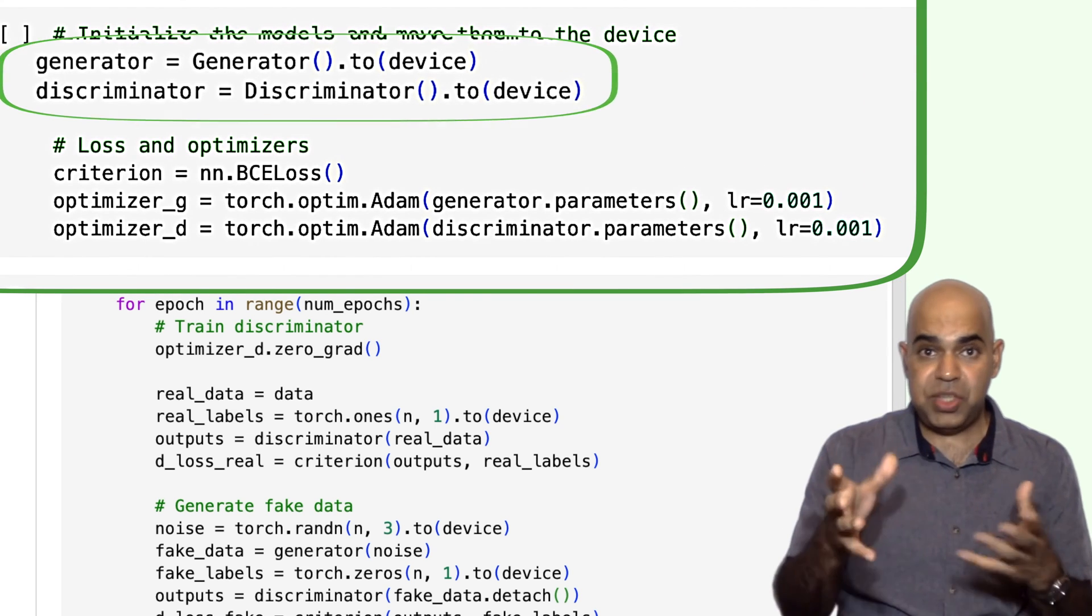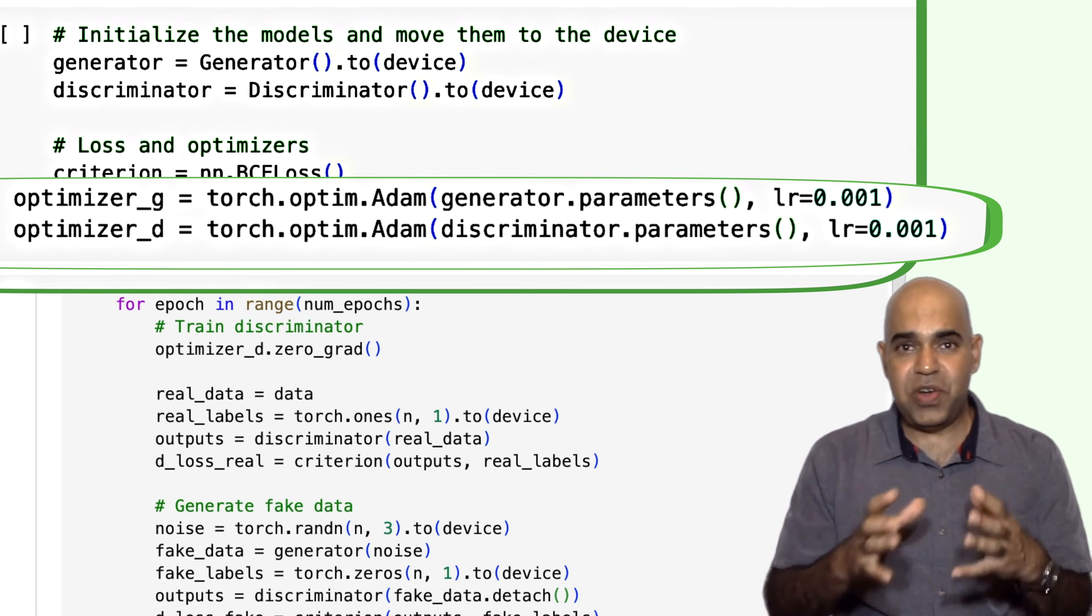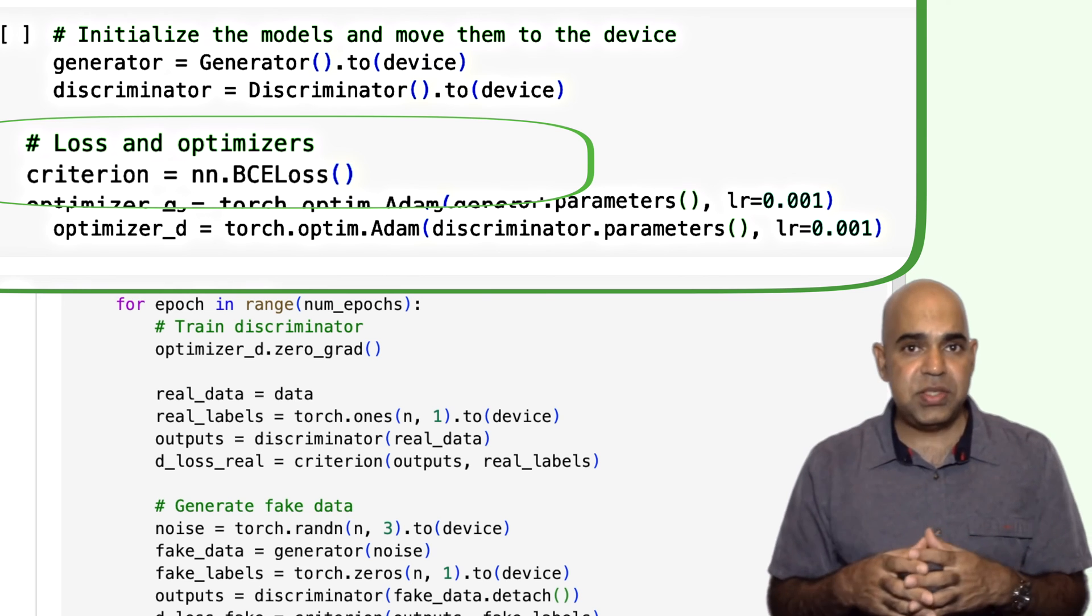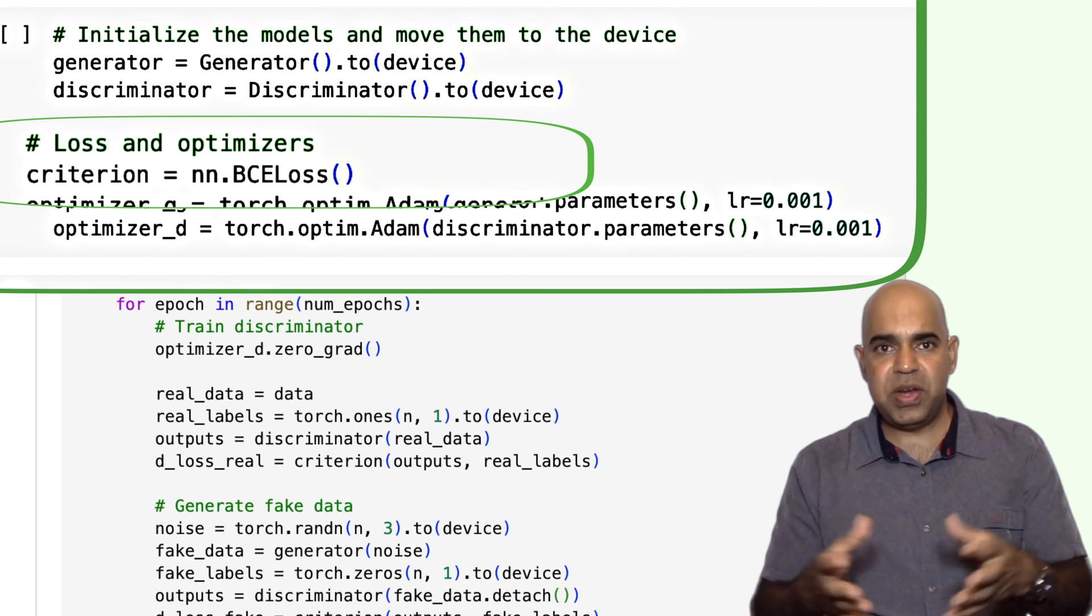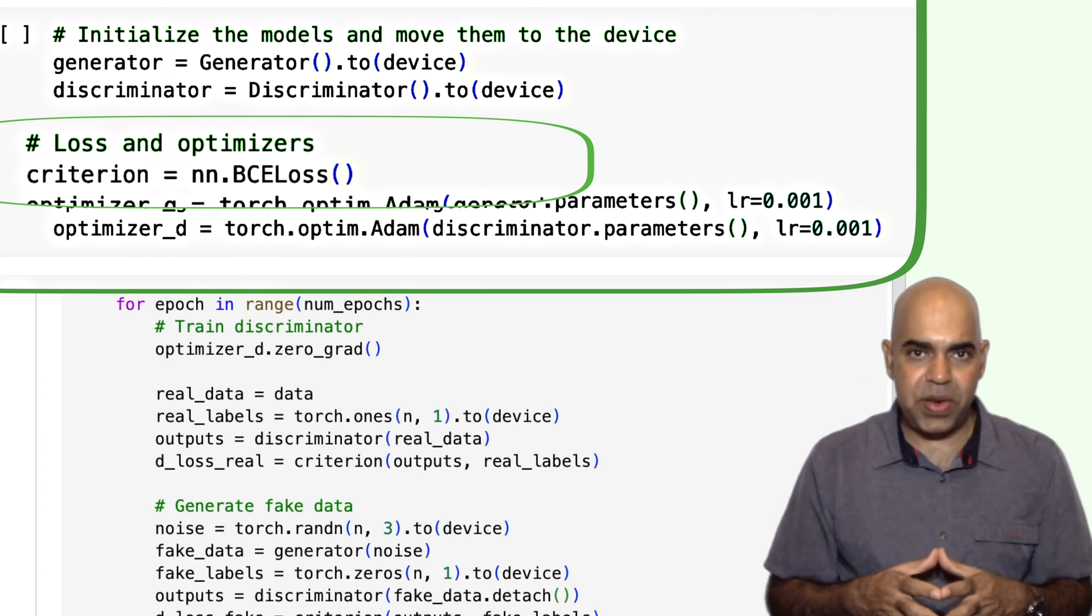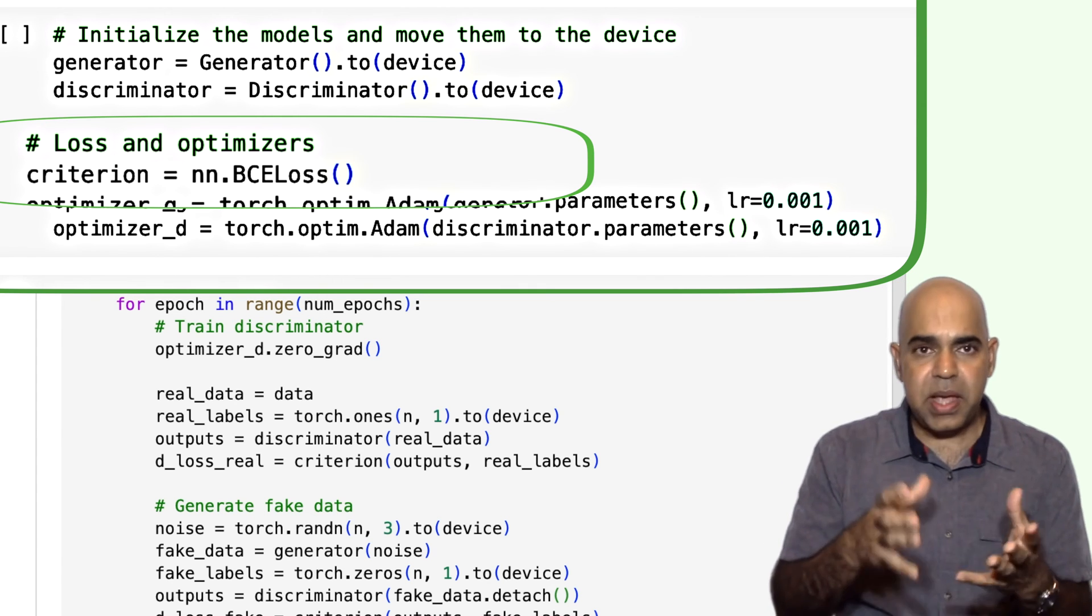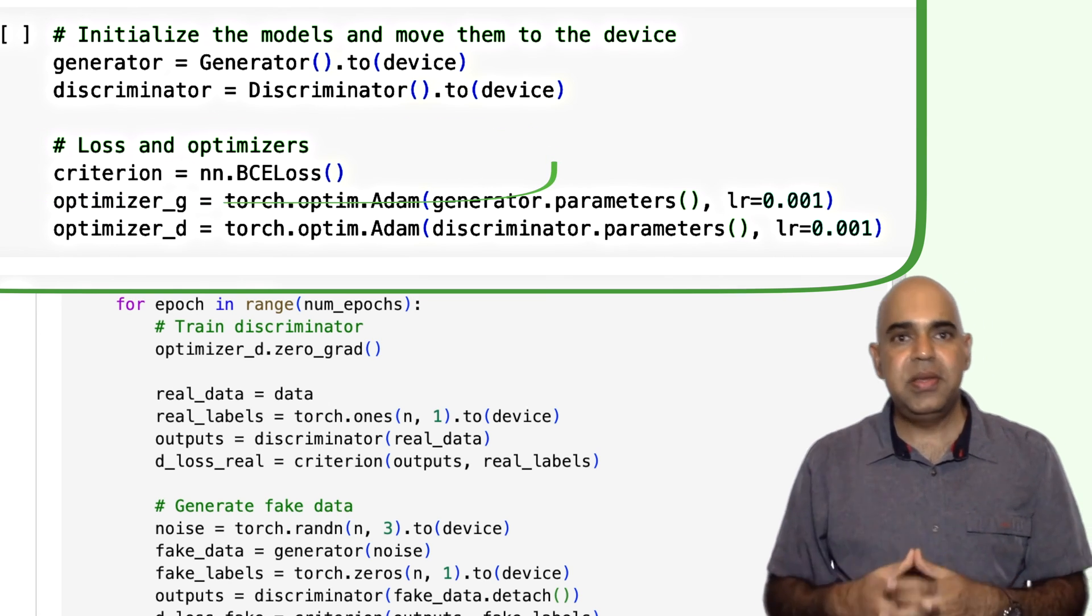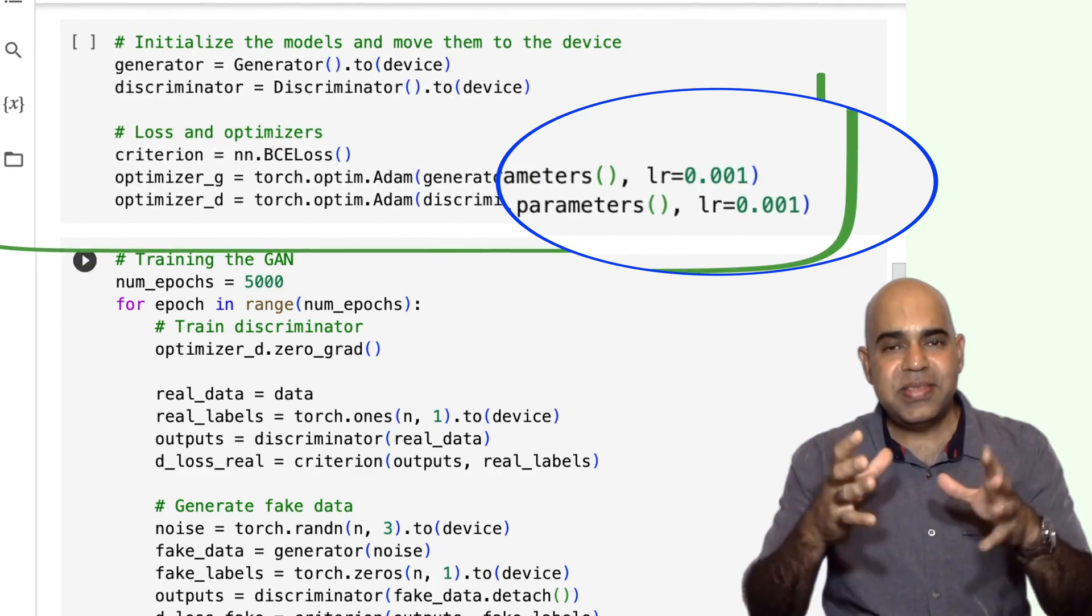In this segment, we are focusing on initializing the generator and discriminator models, defining the loss function, and setting up the optimizers for both the generator and the discriminator. Here, the binary cross-entropy BCE loss function is chosen as the criterion for training the discriminator. This is a common choice for GANs since the discriminator outputs a probability indicating whether the input is real or generated. The BCE loss measures the difference between the true labels and the predicted probabilities. In this case, our true labels are 1s and 0s, 1s representing real and 0s representing generated. We have both generator optimizer and discriminator optimizer with a learning rate of 0.001.